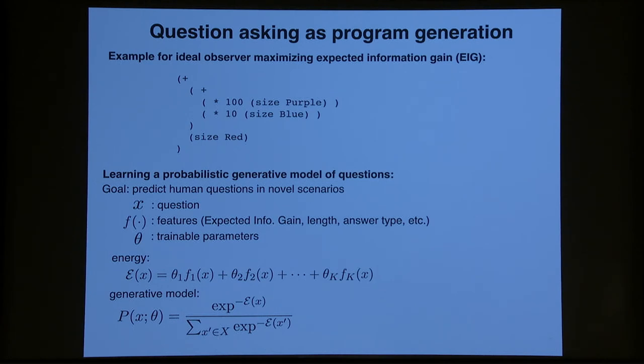So we fit this with maximum likelihood. And again, we find that all of these features are essential. Another finding is that compositionality is absolutely key. There's 18 of these different scenarios. And if you hold out one and try to predict its questions just by reusing the questions people ask for the other scenarios, then you'll never succeed because 15% of the time people ask a genuinely new question. So there's no way you can perform this task without a notion of compositionality.